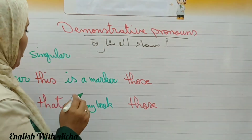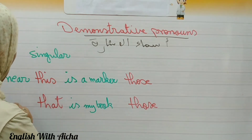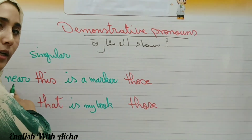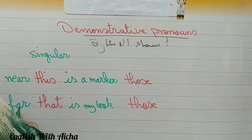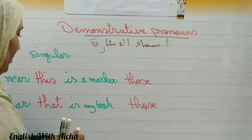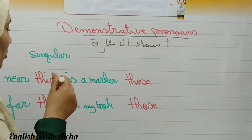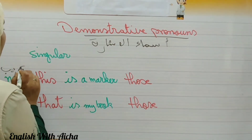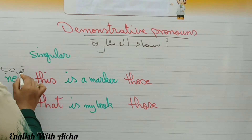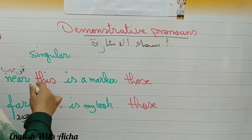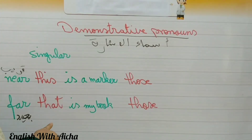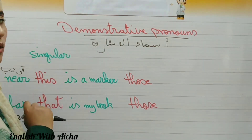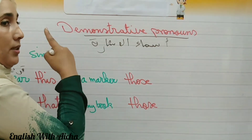So to summarize: we use 'this' for near and 'that' for far, but both are singular. 'That' is for far and 'this' is for near — and it's singular.